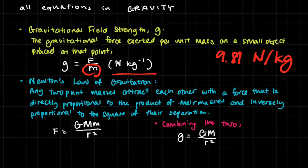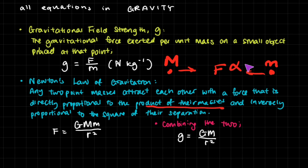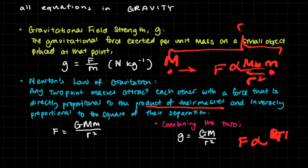For Newton's law of gravitation, we're now going to learn how to calculate F, which we hadn't done before. Newton's law of gravitation states that any two point masses attract each other with a force that is directly proportional to the product of their masses and inversely proportional to the square of their separation. So if you have two point masses, they attract each other with equal and opposite forces. If one has mass M and the other mass m, then F is directly proportional to Mm over R squared, where R is their separation.